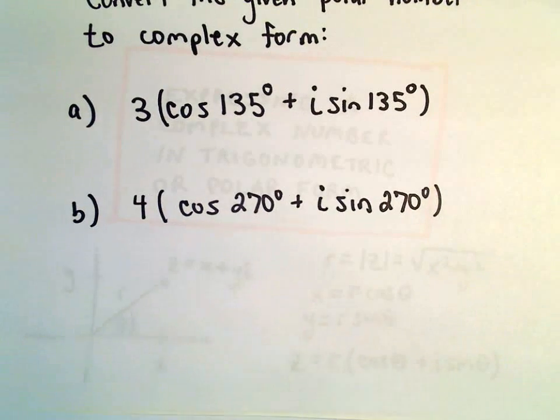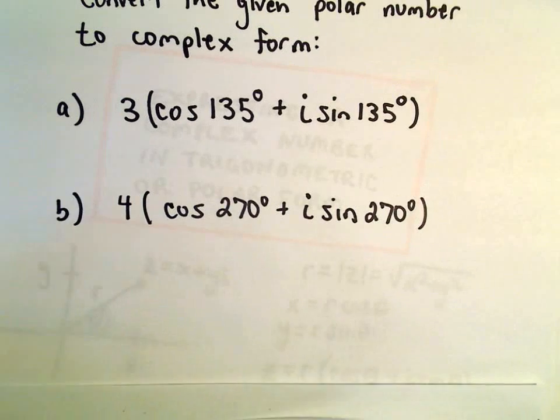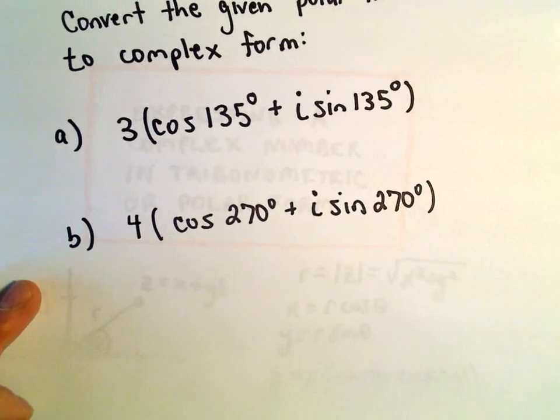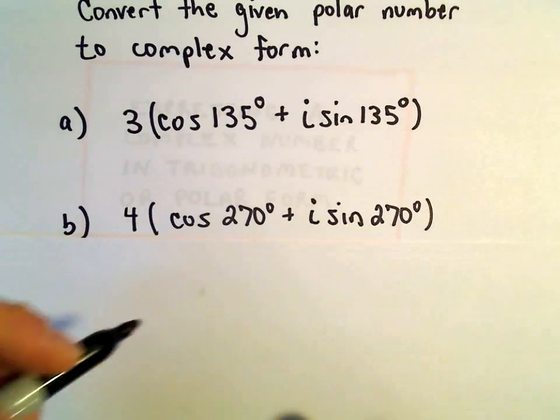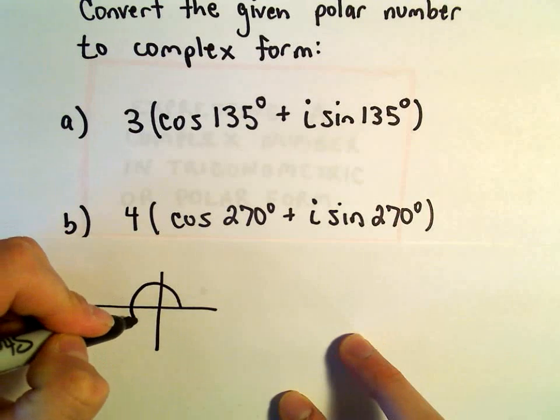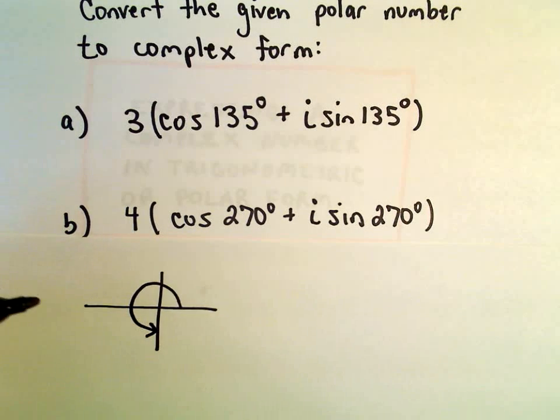So we can do our other example here, I think, real quick as well. Well, so let's see, 270 degrees. If you think about 270 degrees, well, 270 degrees is just going to put us at the negative y-axis.